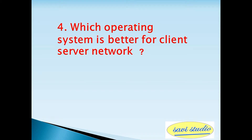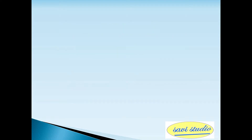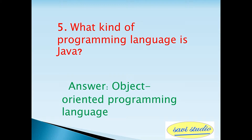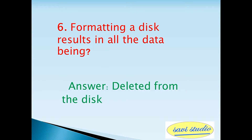Fourth question: which operating system is better for client-server network? The answer is Windows 2000. Fifth question: what kind of programming language is Java? The answer is Object Oriented Programming Language. Sixth question: formatting a disk results in all the data being? The answer is deleted from the disk.